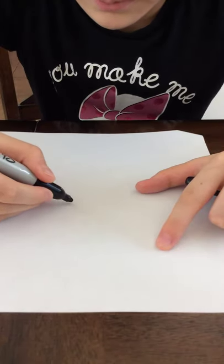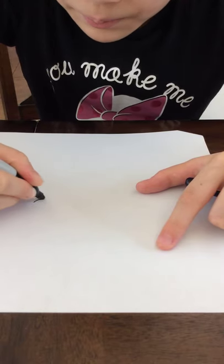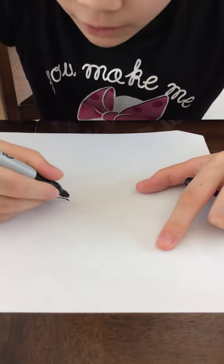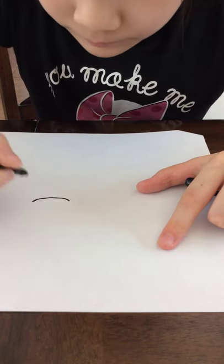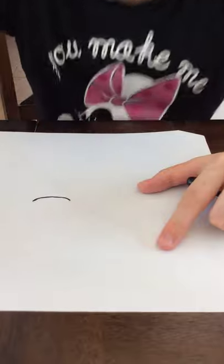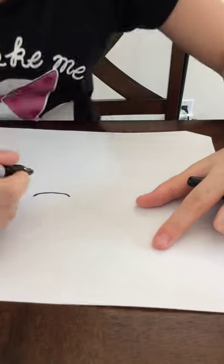First, we're going to draw a little shape, like an oval shape here. Okay, are you done yet? Okay.